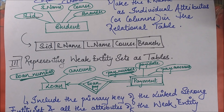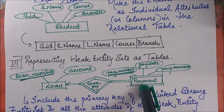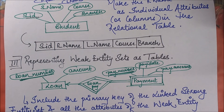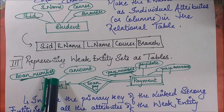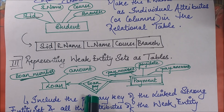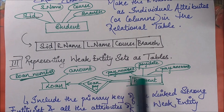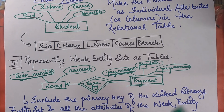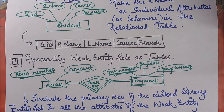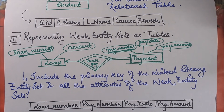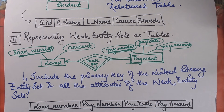Focusing on the diagram, we have a weak entity set and a strong entity set. The weak entity set cannot exist independently. The identifying relationship is composed of the loan number and the discriminator acting as a combination. To represent the weak entity set as a table, we take all the attributes of the weak entity set and in combination add the primary key of the strong entity set. So the final table contains the primary key of the strong entity set and all the other attributes of the weak entity set. This is how we represent a weak entity set.